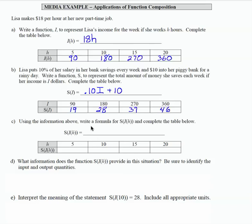So let's see how that would work. Our savings says take .10 times I, but in this case, I is 18H. So I'm going to put that in place of I plus 10. And if I multiply the .10 times 18, I get 1.8H plus 10.